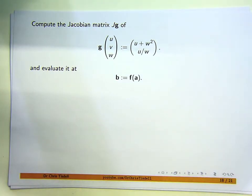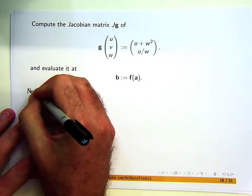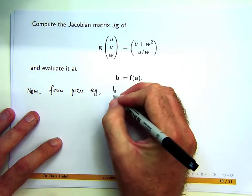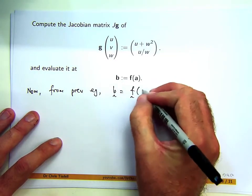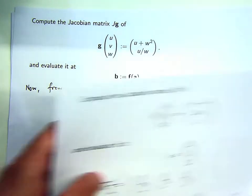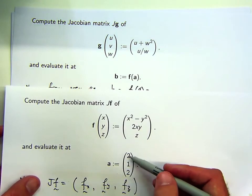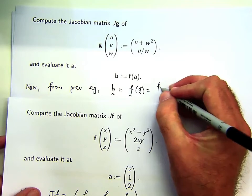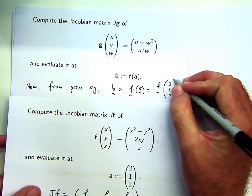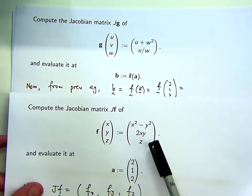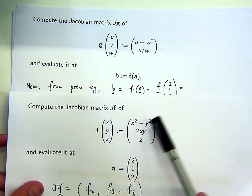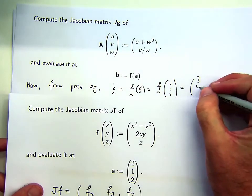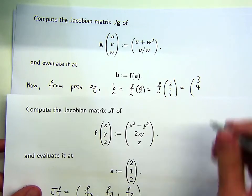From the previous example, we take x=2, y=1, z=2 and plug them in. You get 4 minus 1, which is 3 for the first component. 2xy gives 4 for the second component, and z is just 2. So b equals (3, 4, 2).